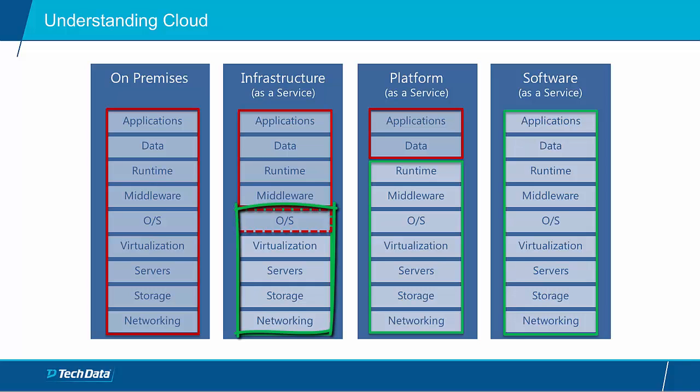Everything you see here in green is what you're outsourcing, which are all these typical infrastructure components like the servers, storage, virtualization, and networking components. We have a dotted line here around the operating system since you may or may not need to bring your own operating system. This will depend and vary based on the licensing agreements and the chosen operating system type, as well as how you plan to deploy it — in a shared or multi-tenant environment, or a dedicated environment where you're renting an entire physical server or data center.